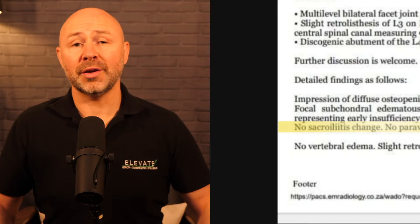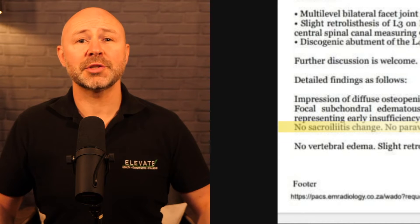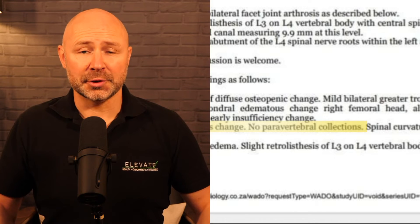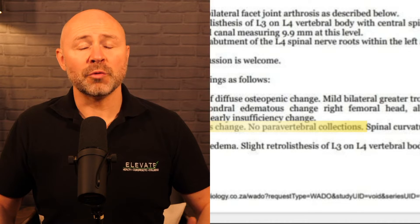No sacroiliitis change — sacroiliitis changes are more commonly abnormal signal in the articular cartilage and erosions of the SI joint, so we're assuming these are not evident. No paravertebral collections, ruling out any evidence of abscesses or cysts, making the likelihood of infection very unlikely.